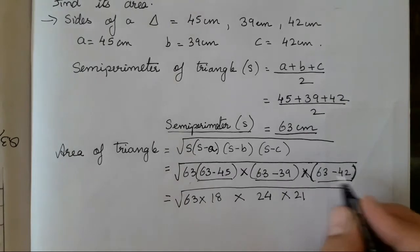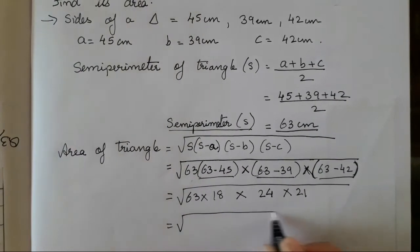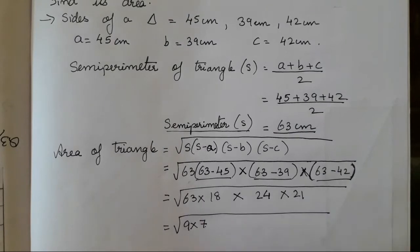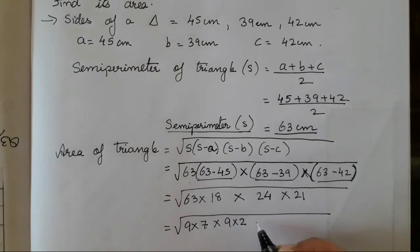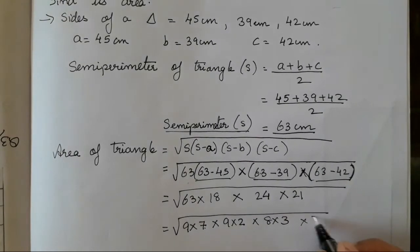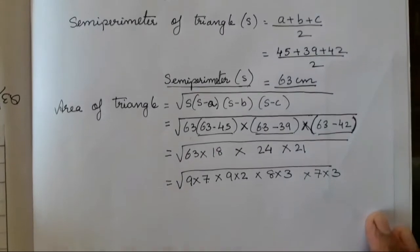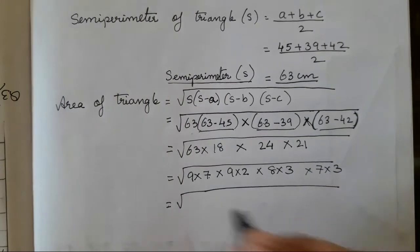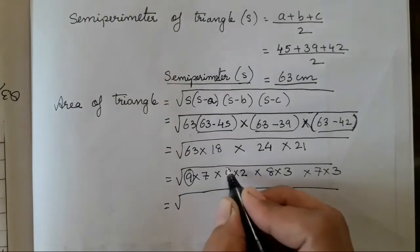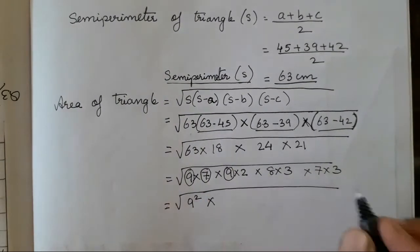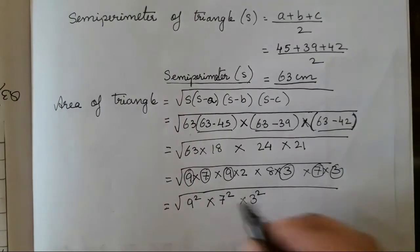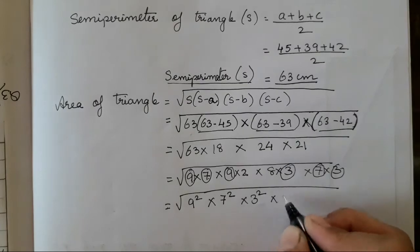Now we have √(63 × 18 × 24 × 21). We can simplify: 9×7 = 63, 9×2 = 18, 8×3 = 24, 7×3 = 21. I am trying to take square roots by finding pairs. We have two 9s, so 9², two 7s, so 7², and two 3s, so 3². What is left is 8×2 = 16, which I write directly.